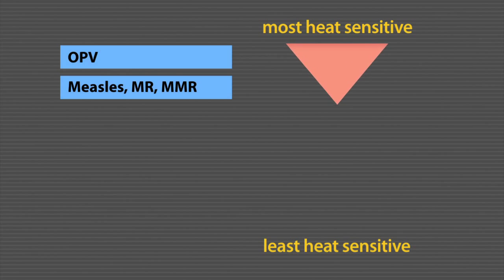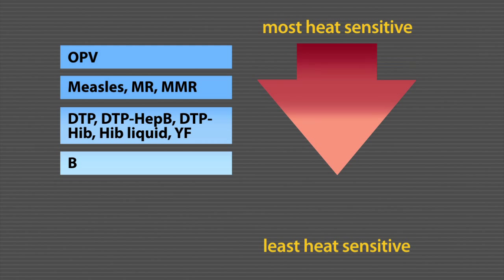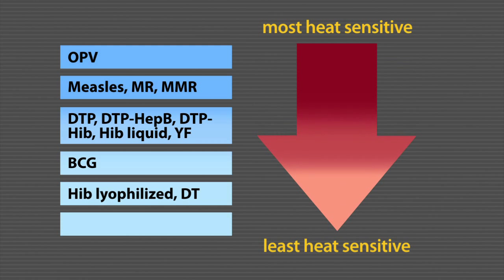This loss of potency is characteristic for each vaccine from each manufacturer as it is characteristic for each vaccine formulation. For example, looking at the table, you can see that oral polio vaccine is the most heat sensitive, while TT, hepatitis B, and Japanese encephalitis are the least sensitive.